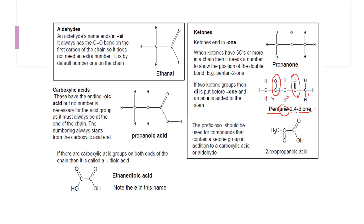If a compound has both a carboxylic acid and a ketone group, the carboxylic acid takes priority. We number from the carboxylic acid carbon, and the ketone is treated as a branch using the prefix 'oxo'. With the ketone at position 2 on a three-carbon chain, the name is 2-oxopropanoic acid.